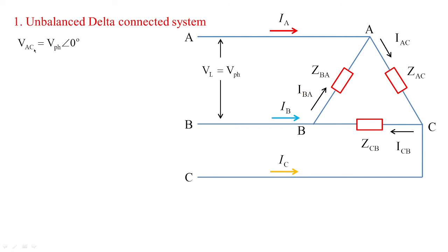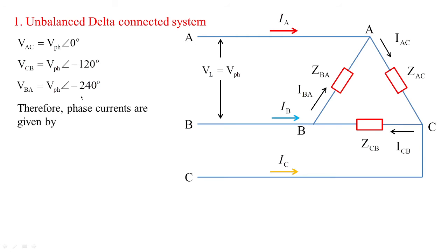If we treat the voltage VAC equal to V_phase at angle zero degrees, then by symmetry the next voltage VCB will be equal to V_phase at angle minus 120 degrees, and similarly VBA will be equal to V_phase at angle minus 240 degrees. These are the supply voltages symmetrically distributed at angles of zero degrees, minus 120 degrees, and minus 240 degrees respectively. Therefore the phase currents are: IAC equals VAC divided by ZAC, ICB equals VCB divided by ZCB, and IBA equals VBA divided by ZBA. These are the phase currents for the delta network.